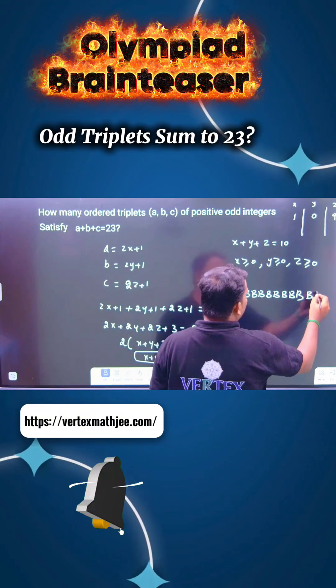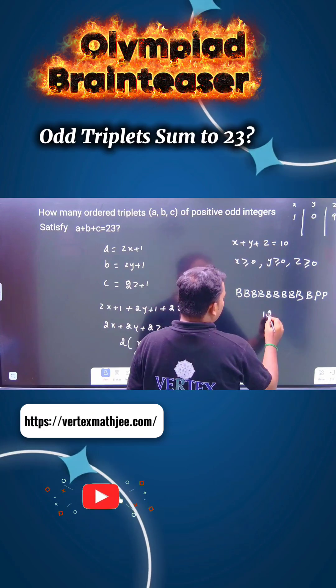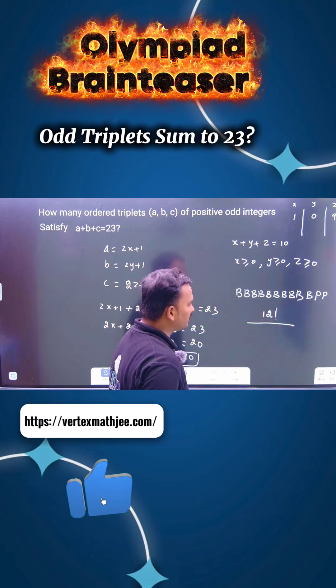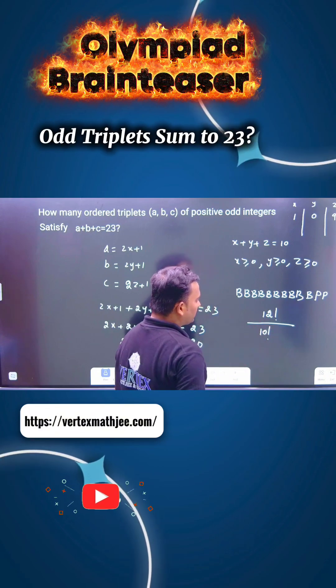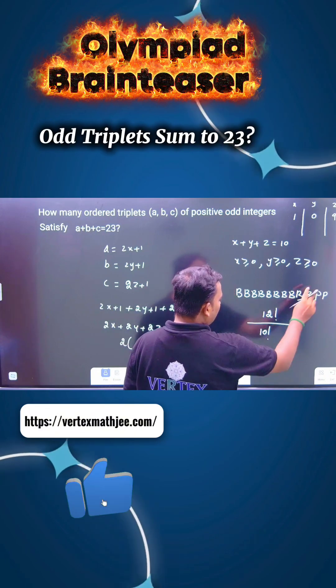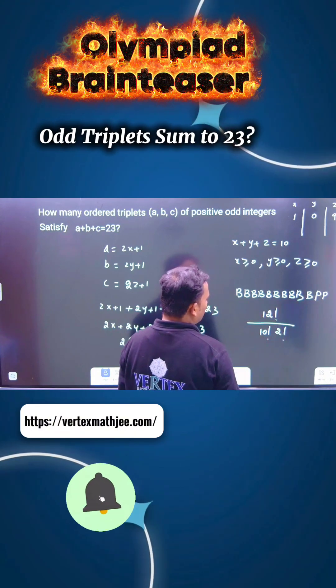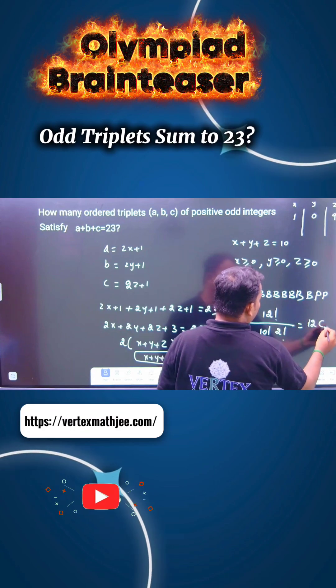So 10 balls here, two partitions are there, totally 12 factorial. How many ways to arrange this? 12 factorial. How many balls are identical? 10, you have to divide it. How many partitions repeat here? 2, 2 factorial. That is the same as 12C2.